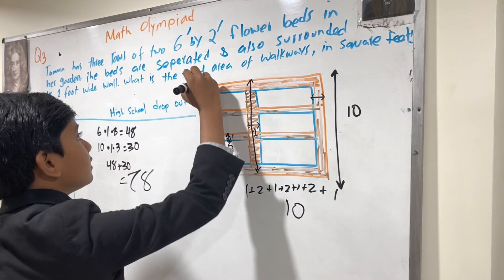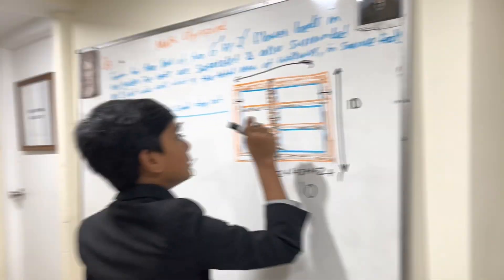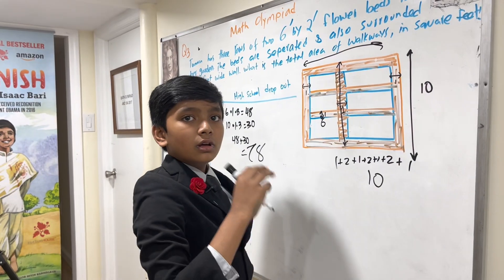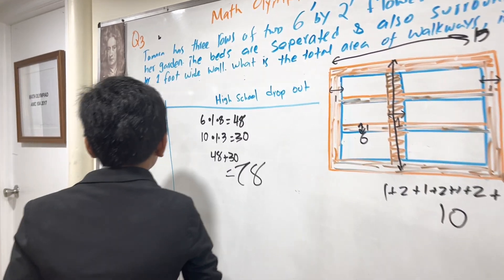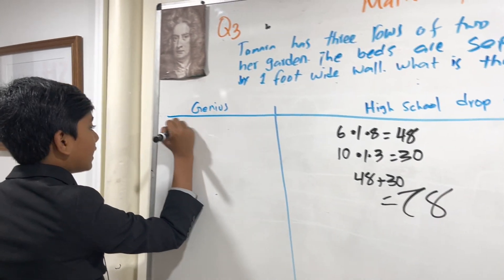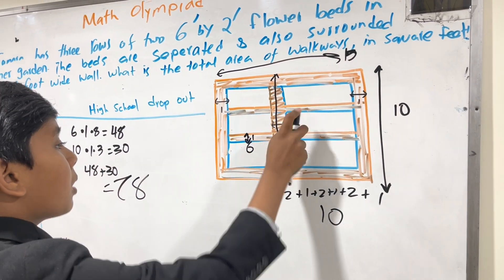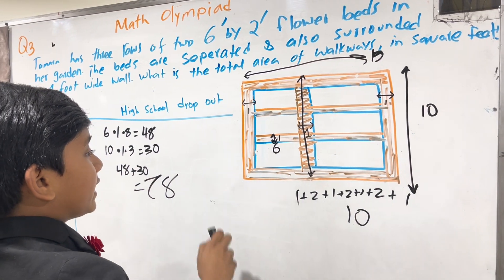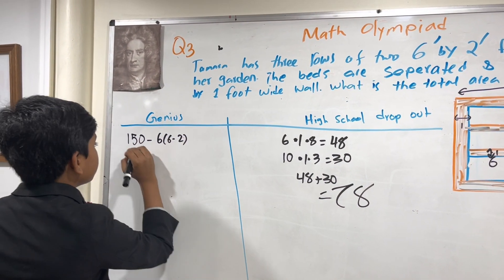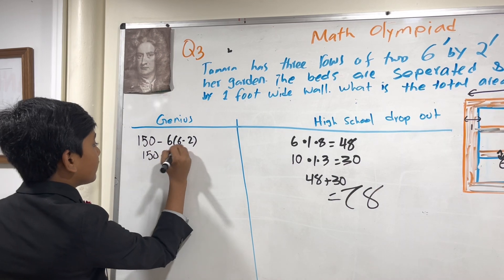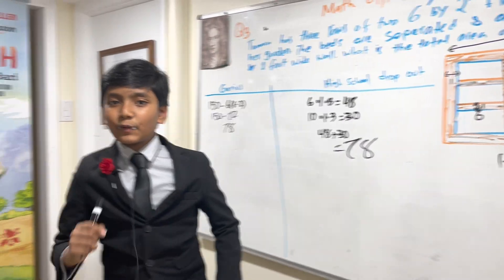This dimension is one plus six plus one plus six plus one, which is three plus twelve, equaling fifteen. So we take fifteen times ten, which is 150 — that's the whole garden. Then we subtract the area of the flower beds, which are six by two and there were six of them: six times six times two equals 72. So 150 minus 72 gives us 78.